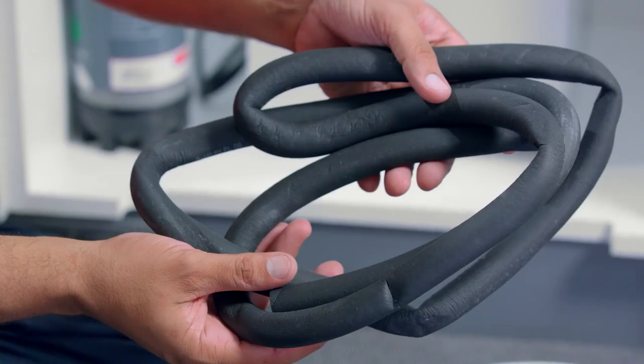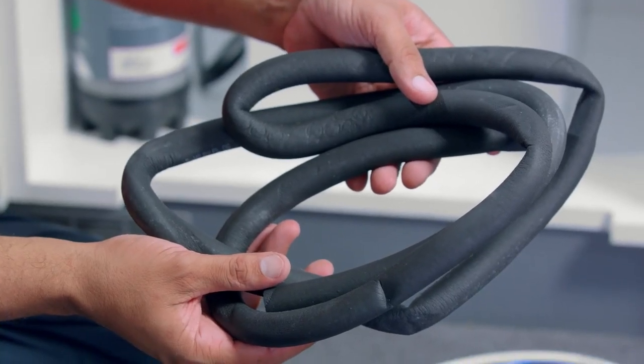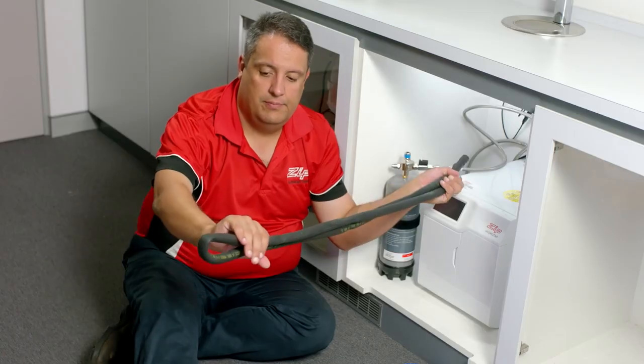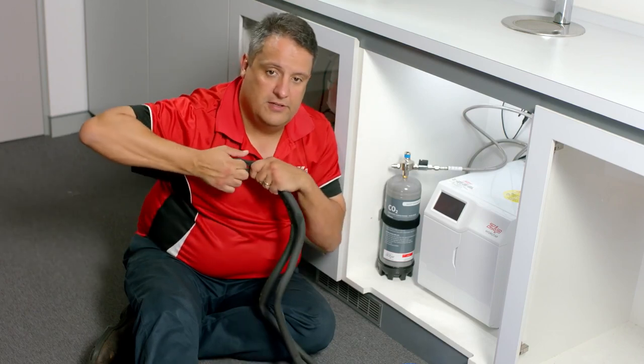Do the same with the vent hose. Also in the box, you will find insulation. To fit, split your insulation in half and cut or break the insulation.